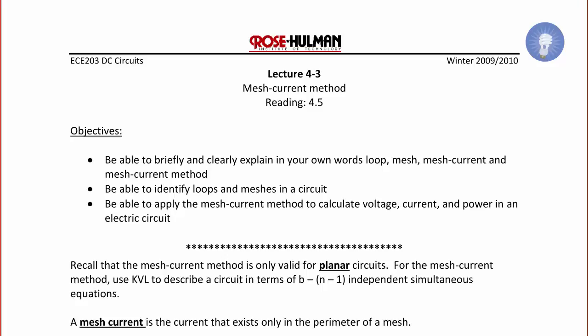Hello and welcome back. Today we will have lecture 4-3 on the mesh current method. Students should be reading chapter 4 of the textbook on analysis techniques such as node voltage and mesh current. The objectives of today's lecture are to be able to briefly and clearly explain in your own words loop, mesh, mesh current, and the mesh current method, be able to identify loops and meshes in a circuit, and be able to apply the mesh current method to calculate voltage, current, and power in an electric circuit.